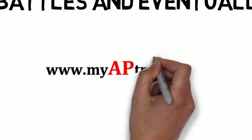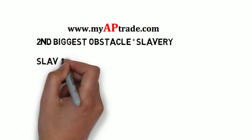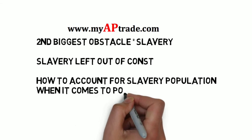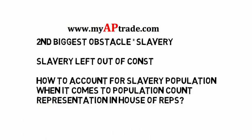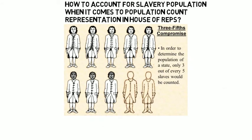Another issue in ratifying the constitution was slavery. Slavery was purposely left out of the constitution because southern states didn't want to ban it since their economy depended on it, while northern states wanted to ban it. Northerners left the issue out since the southern states wouldn't budge. They had to determine how to count each slave when determining population size of states, since the number of House Representatives per state is based on population. The solution was the Three-Fifths Compromise, which made each slave equivalent to three-fifths of a person in determining population size.